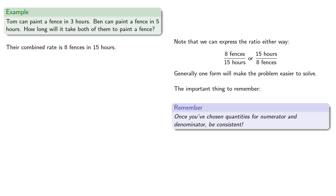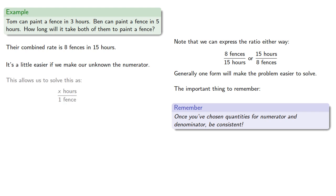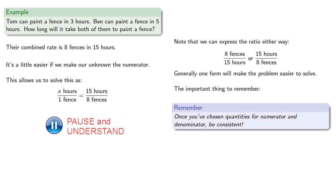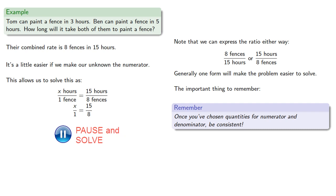As a general rule, it's a little easier if we make our unknown the numerator. This allows us to set up our problem as x hours for one fence, and we choose the form that has hours in the numerator — fifteen hours per eight fences. So that's x divided by one equals fifteen-eighths, and we solve to get the same answer.